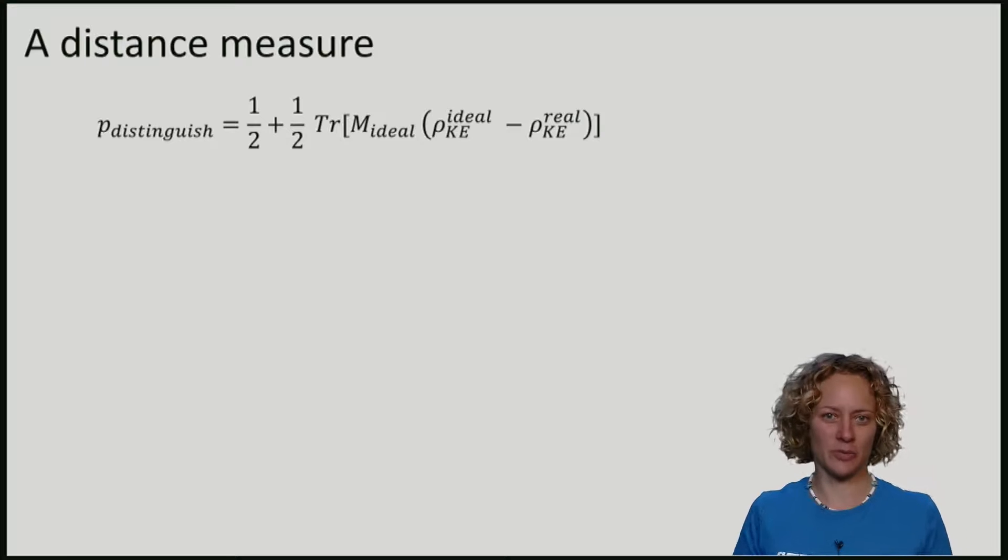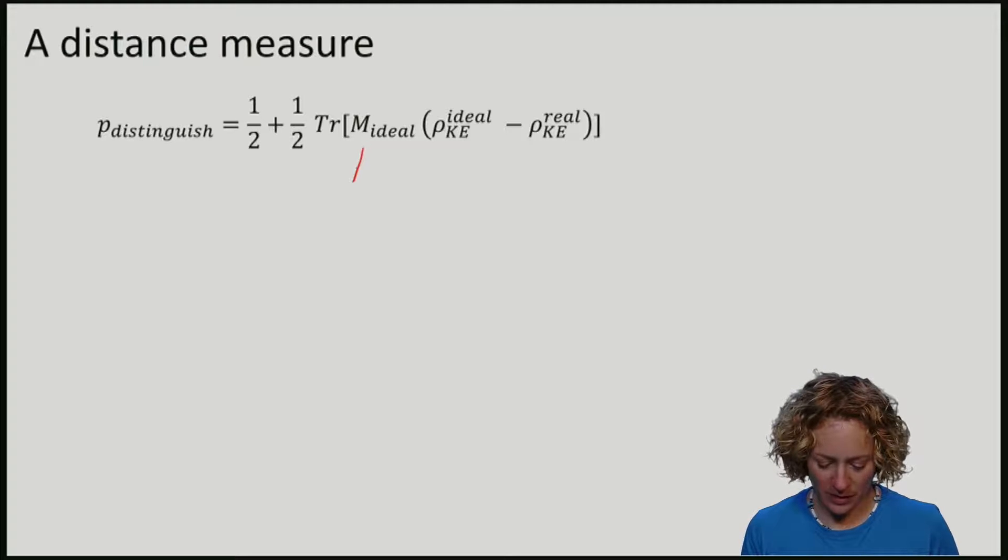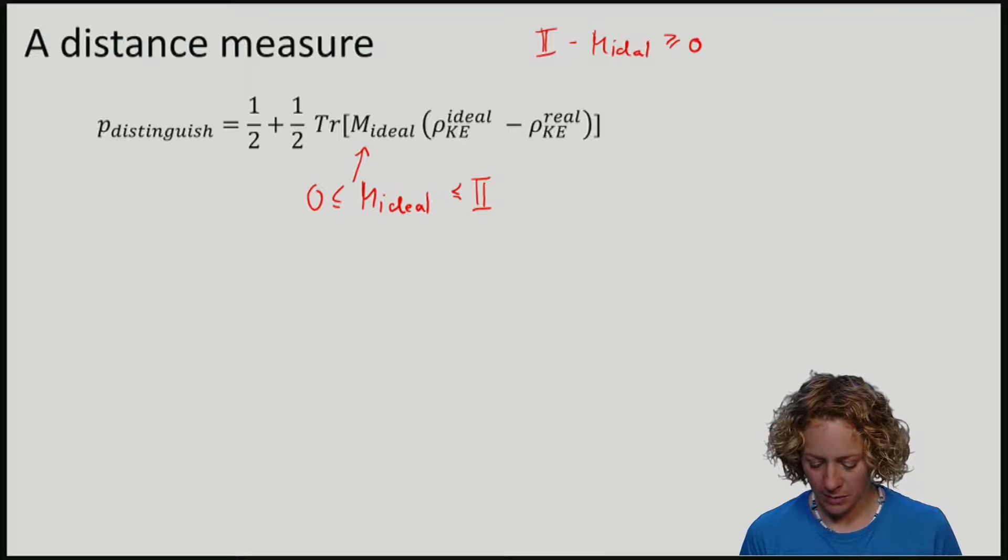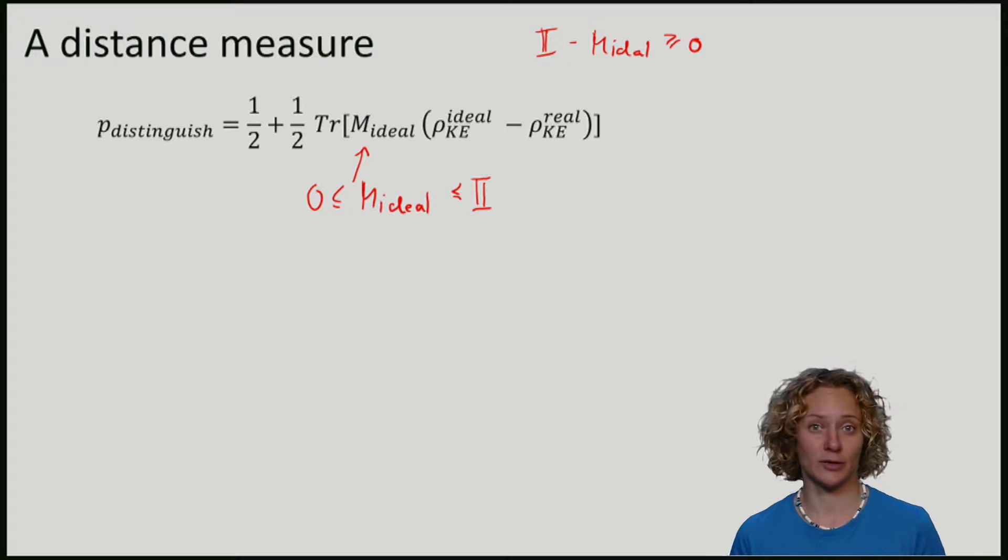Here I have again written the distinguishing probability. And of course, being very smart, you might say that you want to find the best measurement to distinguish the two states. So, we're going to optimize here over all measurement operators M ideal. So, we know that POVM operators are positive. And we also know that if I add this one plus M real, I must get the identity. So, this is also true. So, what this means is that this here is positive semi-definite, meaning that the largest eigenvalue of M is also not larger than 1.